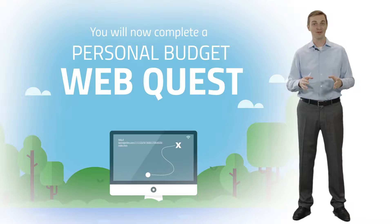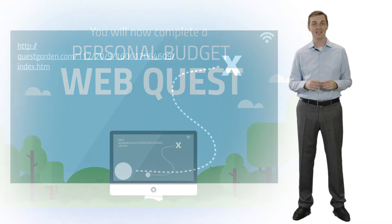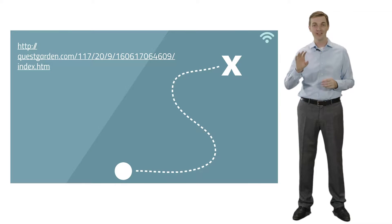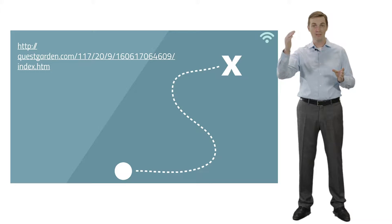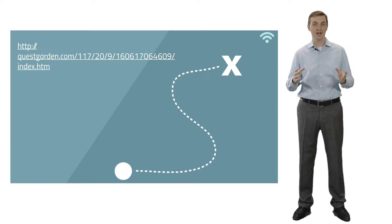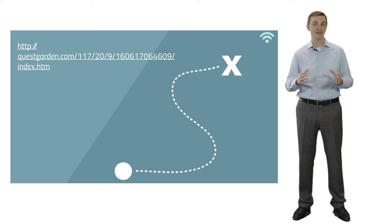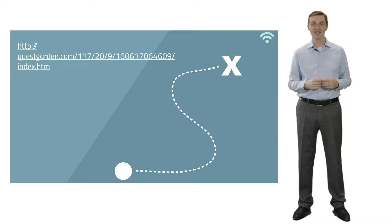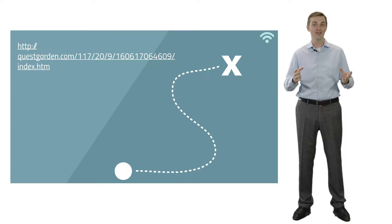The next activity I would encourage you to do is the personal budget web quest — you can click on the link. This is something where you can map out a budget of how it may look in your life. It's a realistic budget where you can go through the expenses, the income, and the tax implications. This takes a little more time, but I encourage you to do this web quest on your own time.